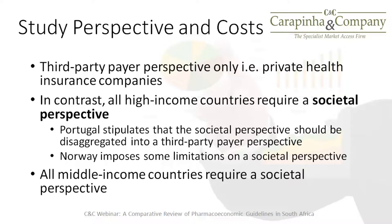The first key observation concerns study perspective and costs. South Africa's suggested perspective for pharmacoeconomic evaluations is that of a third-party payer — specifically, a private medical scheme. In contrast, guidelines in high-income countries generally require a societal perspective. For instance, in Portugal, a societal perspective should be disaggregated into a third-party payer perspective, though the term third-party payer there is not comparable to how it is used in the South African context.